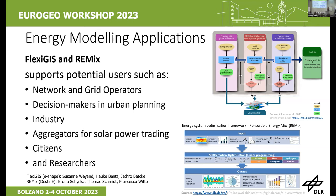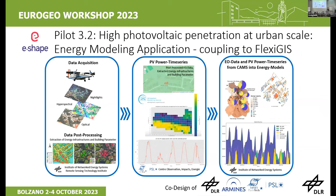As Philippe noted, the second part of eShape was in cooperation with MinParis. The first part is our airborne data collection — night lights, hyperspectral data, and optical data — post-processed with colleagues from the Remote Sensing Technology Institute. The second part uses the time series resulting from that post-processing, fed into FlexiGIS to produce optimization outputs showing how different types of renewable energy can be optimized for georeferenced data.